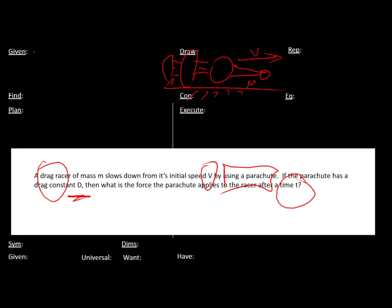So I've got the racer, it has a mass m, and an initial speed, I'm going to have to call it v0. Let's see, what else? I know there's a parachute with a drag constant D.